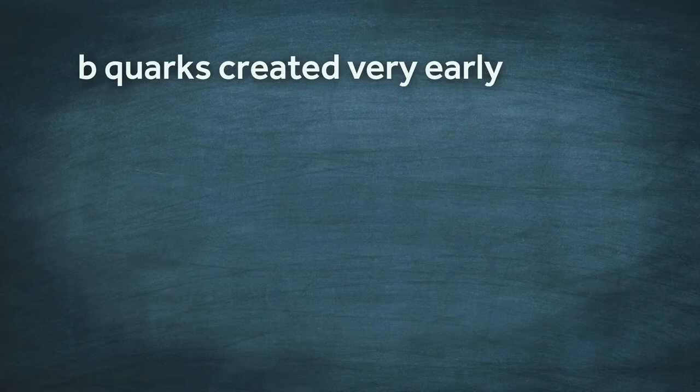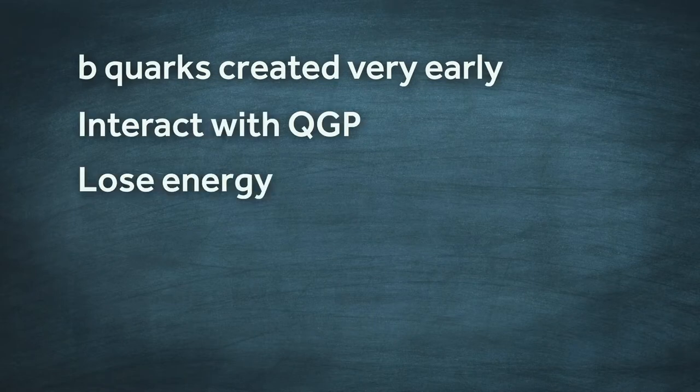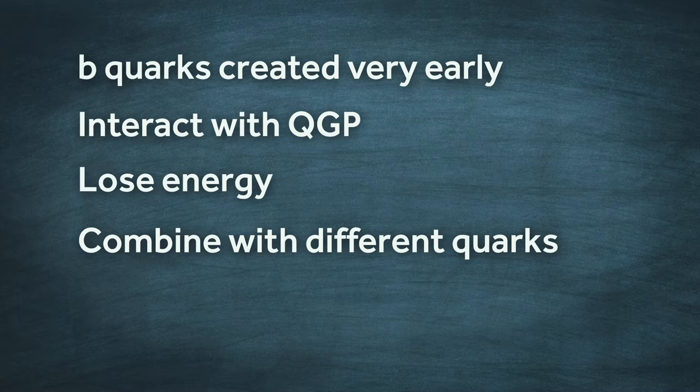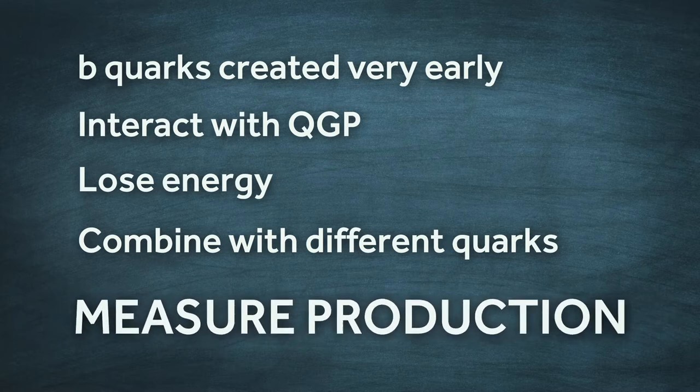Recapping, B quarks are created very early in the collision, interact with the QGP, lose energy, and then combine with different quarks, forming B mesons. Our goal is to measure how many of them are produced.